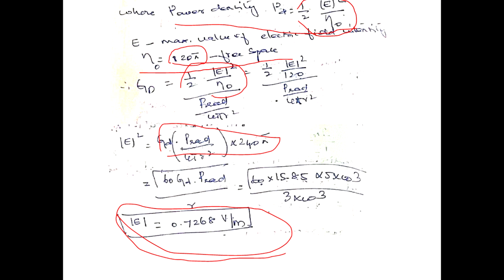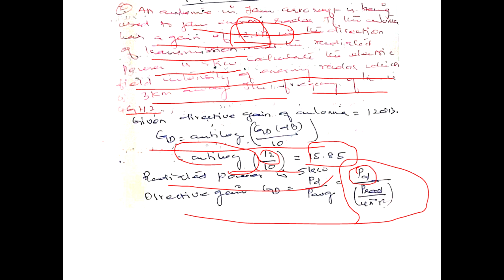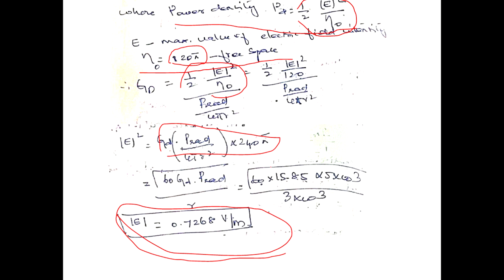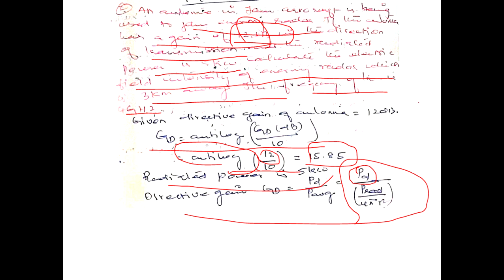This is the electric field strength of the given airborne jammer antenna, which is used to jam the enemy radar.